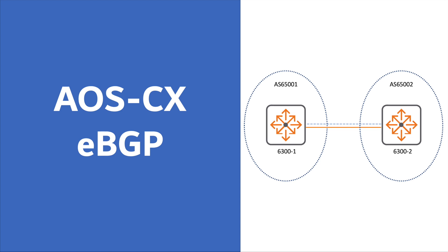That's it for this video — another entry in the Aruba AOS-CX basics series. The plan is to move on to iBGP, then VXLAN, building up to Spine and Leaf with EVPN. If you'd like to see something else, please leave a comment. The channel recently passed 15,000 subscribers — thank you very much for the support, likes, comments, and views. It's coming up to the fifth anniversary of the channel. Thank you for watching — my name is Joe Neville, goodbye.